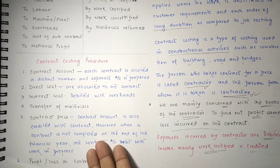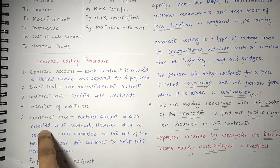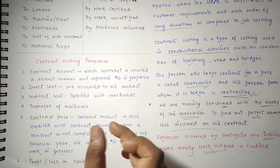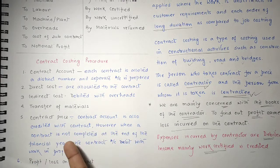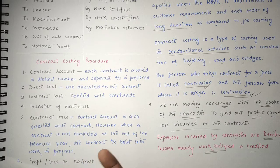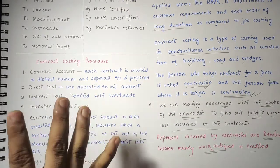Most importantly, the contract price: the contract account is created with the contract amount. However, when the contract is not completed at the end of the financial year, the contract will be debited with work in progress. If a contract spans multiple years, a separate contract account is prepared for each year.